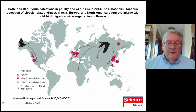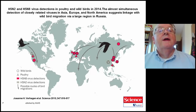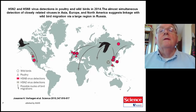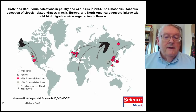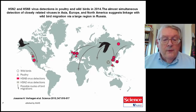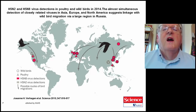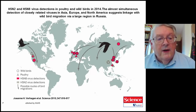Current influenza viruses circulating through the world right now are H5N2 and H5N8. This particular slide shows what happened in 2014, and the almost simultaneous detection of closely related viruses in Asia, Europe, and North America suggests linkage with bird migration via a large region in Russia. Back in 1997, H5N1 appeared in China and spread throughout the world. Those H5N1 viruses have mutated to become the H5N2 and H5N8, which are causing major problems in poultry throughout the world today.